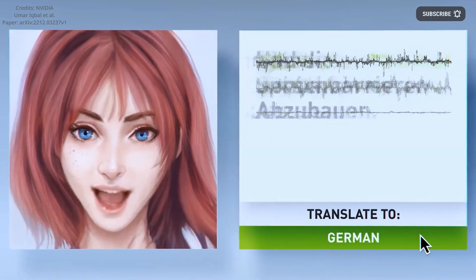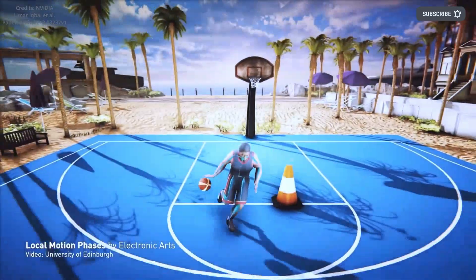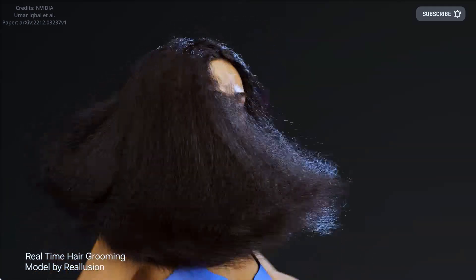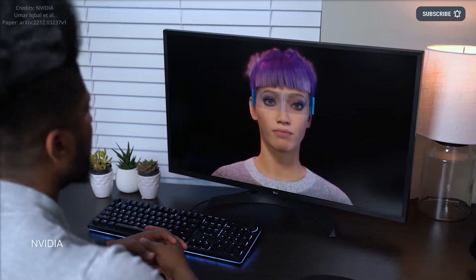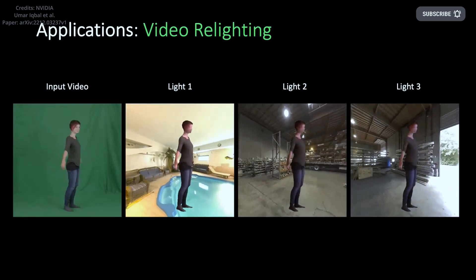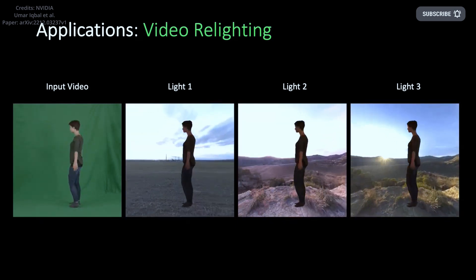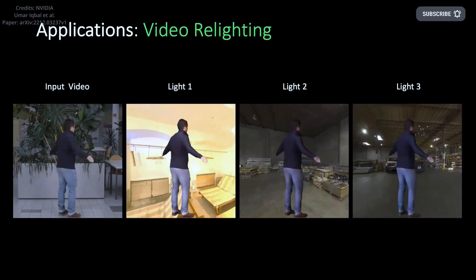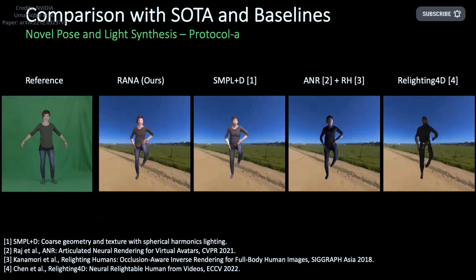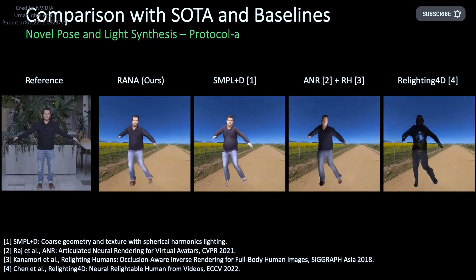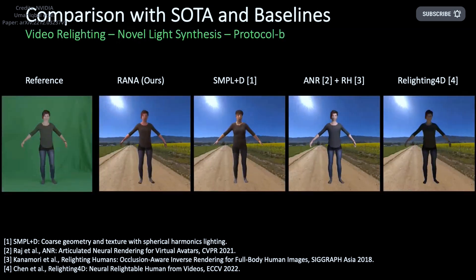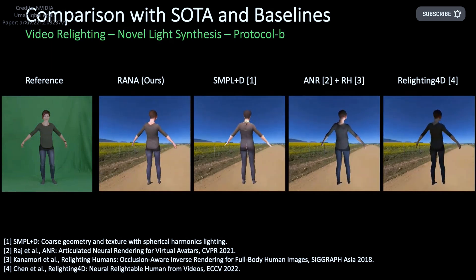Articulated neural avatars similar to humans have various applications in telepresence, animation, and the production of visual content. These avatars need to be easy to create and animate in different poses and viewpoints, able to render photorealistic images, and simple to adjust lighting in different scenarios in order to be widely used. One common technique for creating these avatars is through the use of monocular films, but the synthesized images are limited by the lighting conditions in the training video. Other methods for relighting human avatars have been proposed, but they do not allow the user to control the body's pose and often require multi-view photos taken in a controlled environment using a light stage for training. Now with NVIDIA's Relightable Articulated Neural Avatar technique called RANA, these problems are solved by creating photorealistic human animations in any body posture, perspective, and lighting scenario.